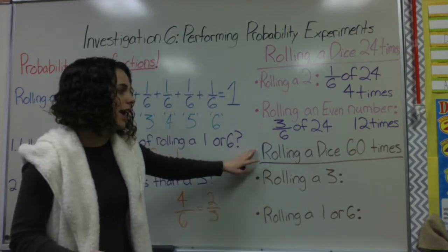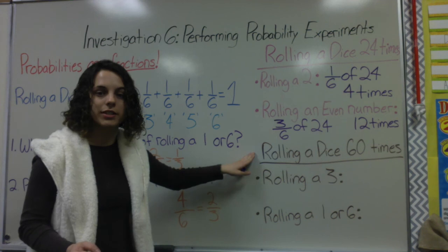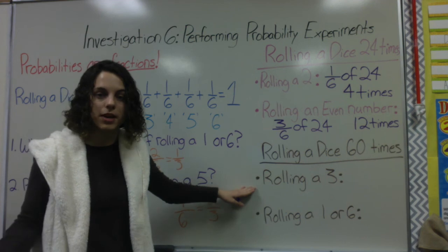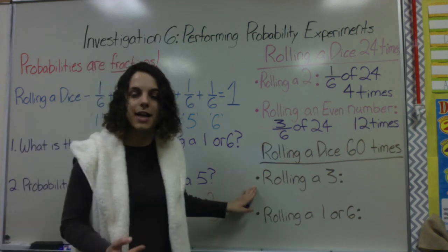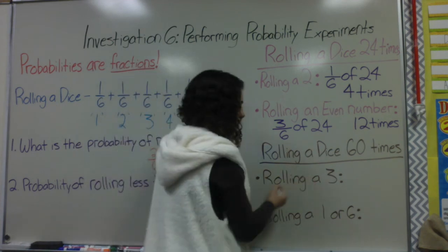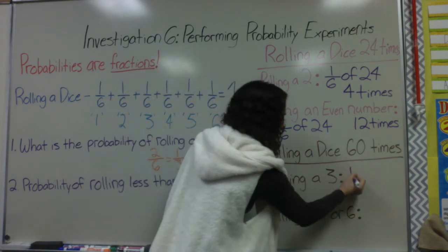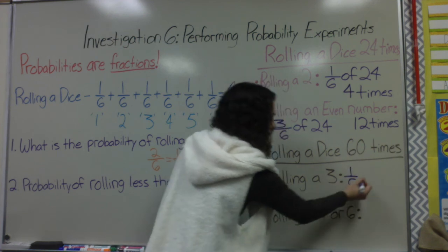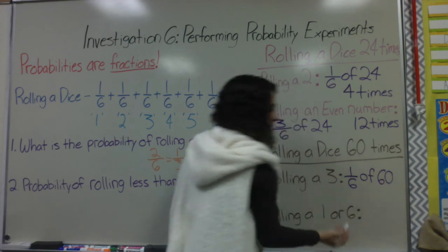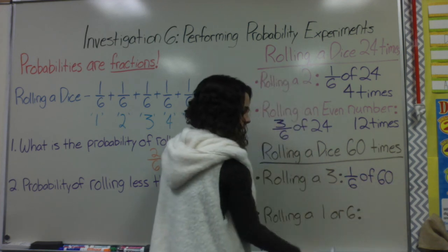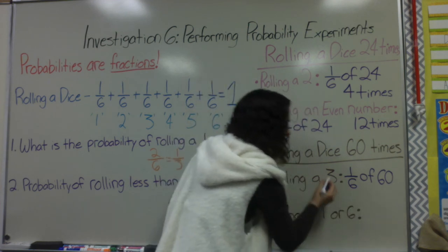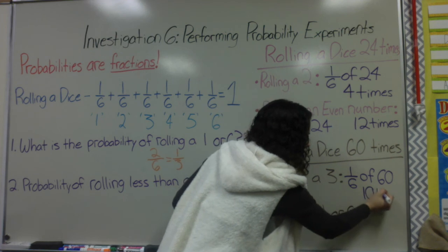What if I were to roll the dice 60 times altogether? We approach this the same way. How many times would I roll the number 3 if I were to roll a dice 60 times? The probability of rolling a 3 is 1/6, but I'm rolling it 60 times, so I want 1/6 of 60. Divide by the denominator: 60 divided by 6 is 10. So I would possibly roll the number 3 ten times.